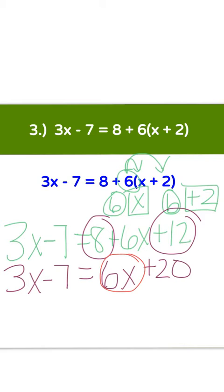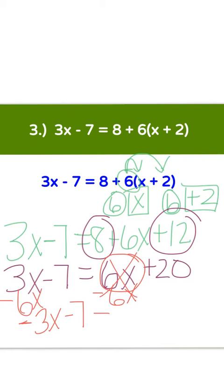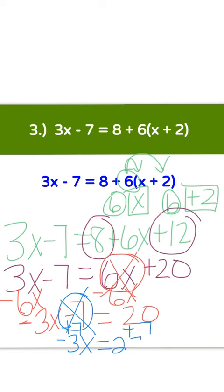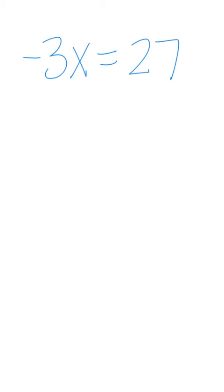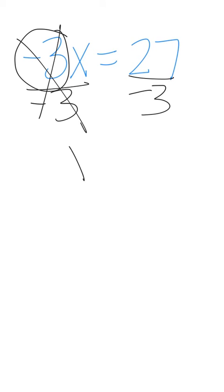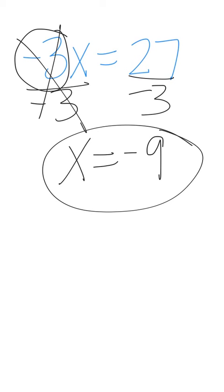Now we want to get the variable on the left, so we subtract 6x from both sides. Positive 3x minus 6x — different signs, subtract: 6 minus 3 is 3x and 6 was bigger, so we keep the negative. Bring down the minus 7 equals positive 20. Now add 7 to both sides to get the constant on the right. That leaves negative 3x equals 27. Divide by negative 3 to cancel the coefficient: positive divided by negative is negative, and 27 divided by 3 is 9. Your answer is x equals negative 9.